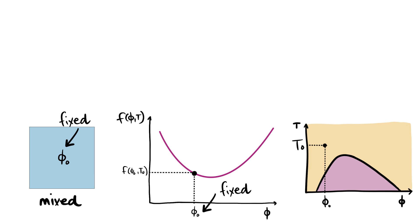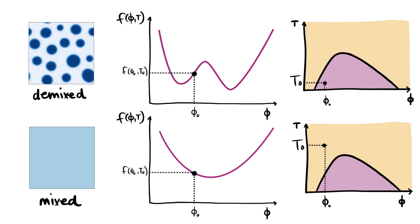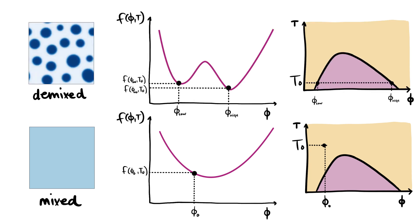So under these conditions, the free energy is minimum when the system is homogeneously mixed at this point in the plot. In the other case, however, the free energy can be lowered by splitting the system into two phases of higher and lower concentration.